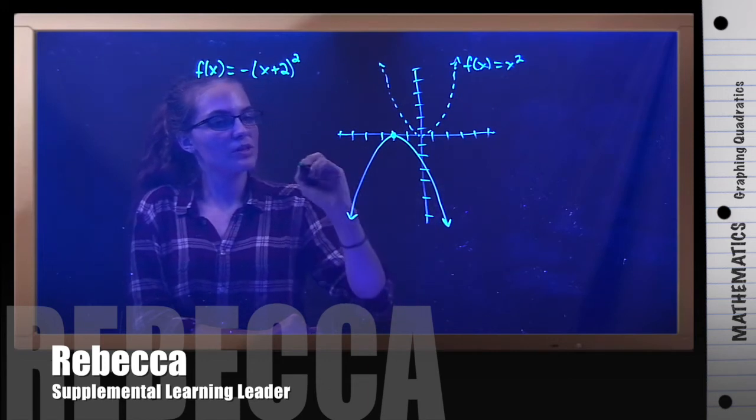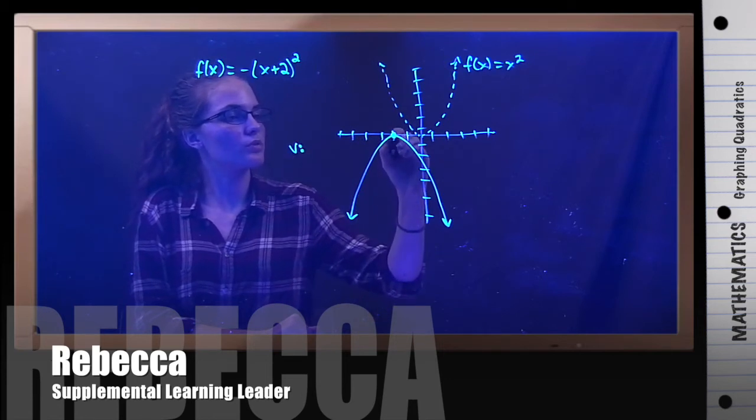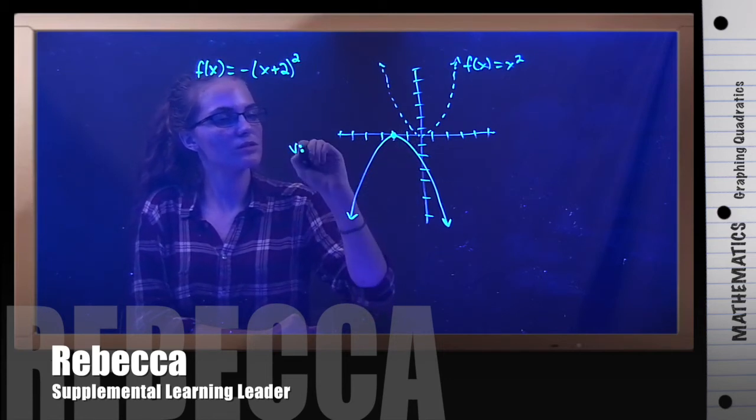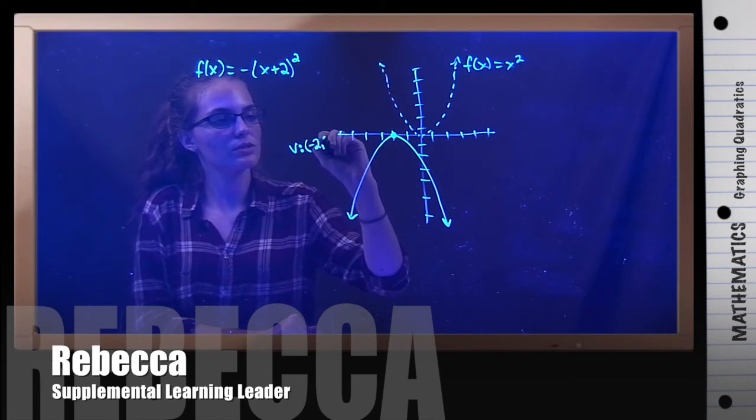Also something you should be able to identify is the vertex. So this point right here is the vertex, and the coordinates are negative two, zero.